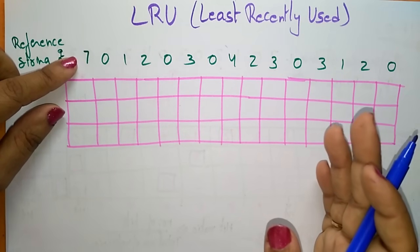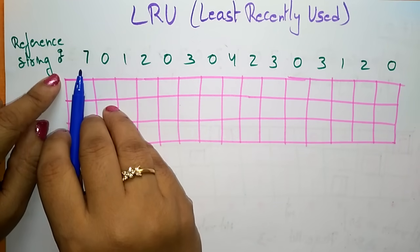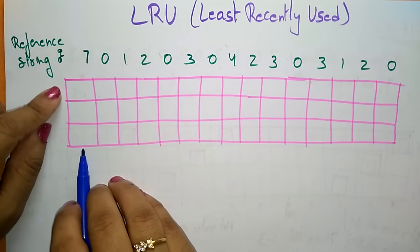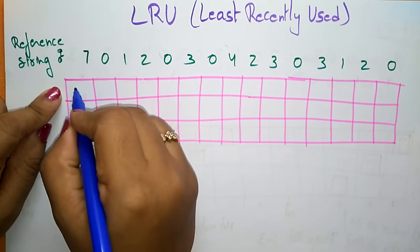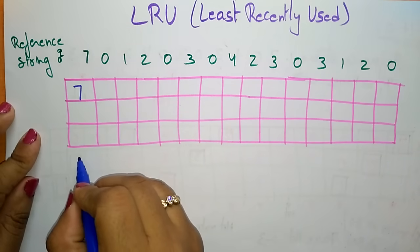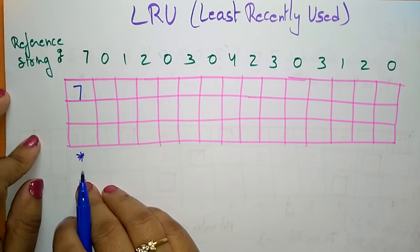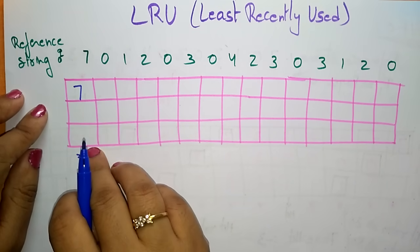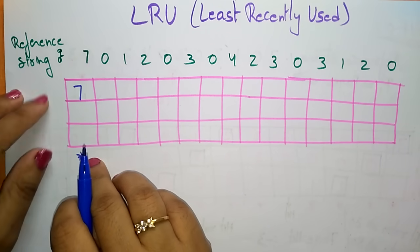So the first page referenced by the user is 7. Since 7 is not placed in the main memory, we have to bring it from the disk and place it in the main memory — so there is a page fault. Because the requested page is not present in the main memory, we call it a page fault.